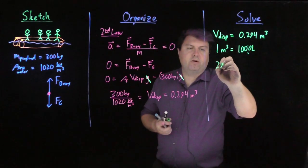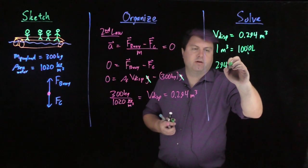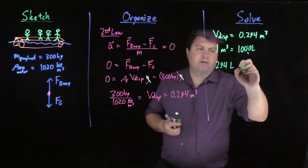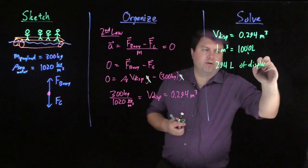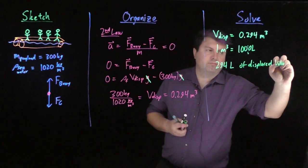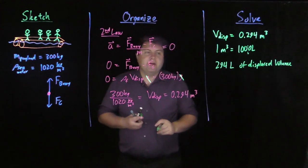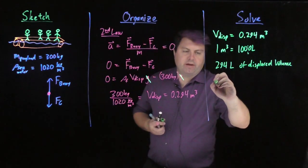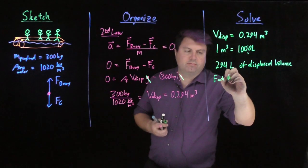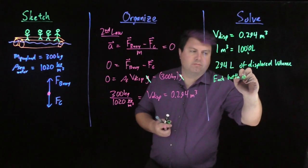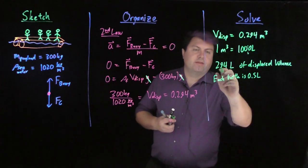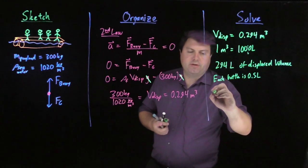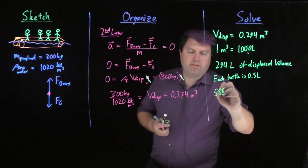So then we have 294 liters of displaced volume. If we have that, then right, and then we have each bottle is 0.5 liters. Then we'd have to multiply this by 2, and so we'd get 588 bottles.